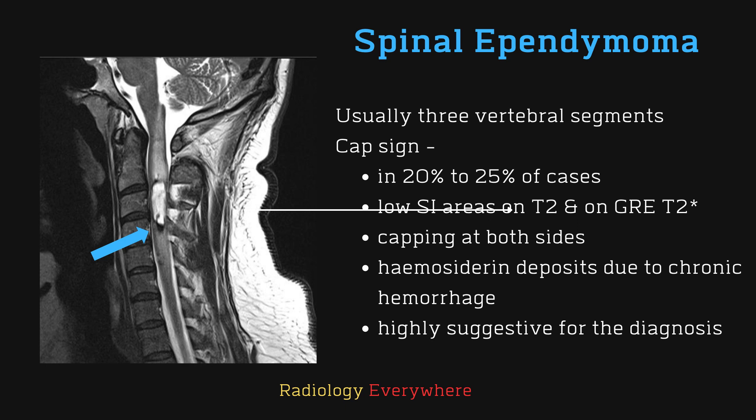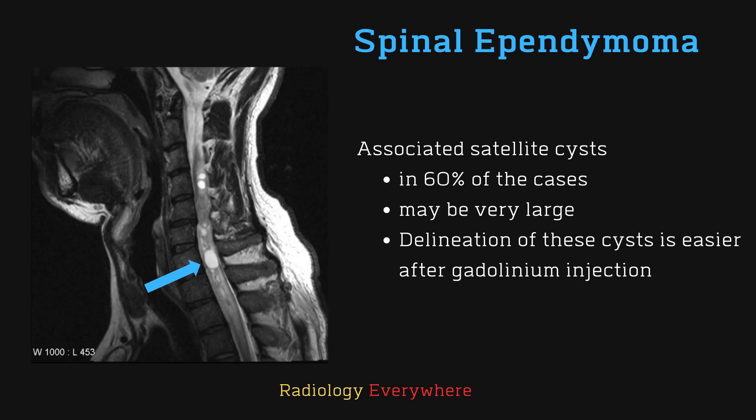We can see the cap sign in 20 to 25% of cases. This corresponds to low signal intensity areas on T2 and gradient echo T2-star images, and we can see the cap at both sides of the tumor margins. These caps are hemosiderin deposits due to chronic hemorrhage of the tumor. If you can see the cap sign, it is highly suggestive of a diagnosis of ependymoma.